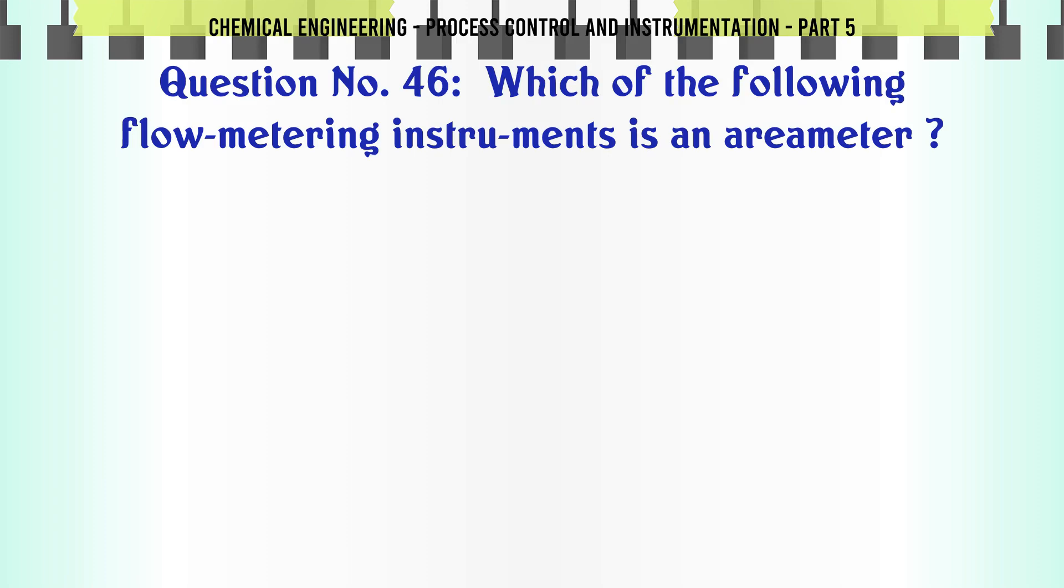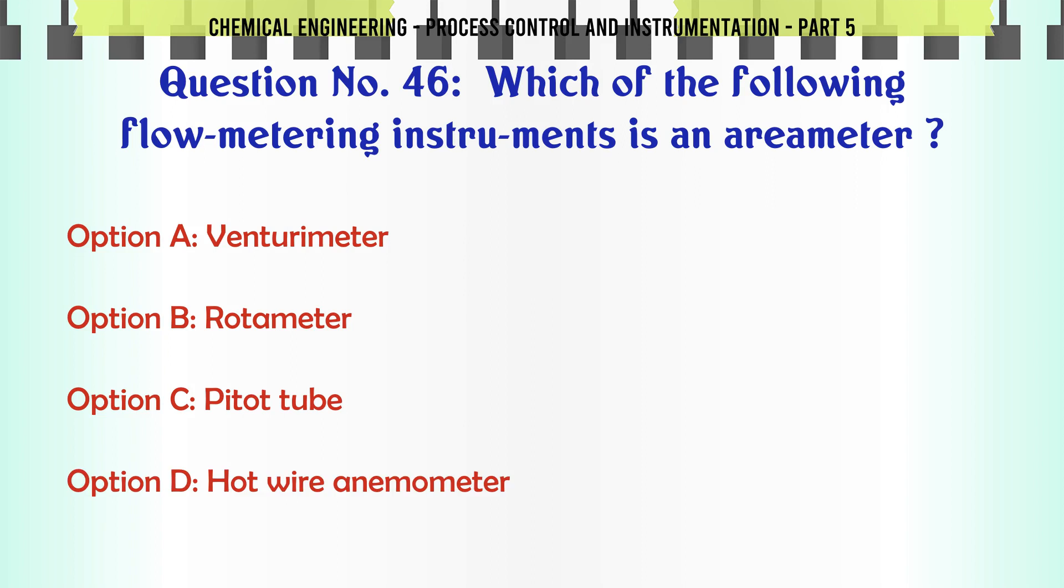Which of the following flow metering instruments is an area meter? A. Venturi meter. B. Rotameter. C. Pitot tube. D. Hot wire anemometer. The correct answer is Rotameter.